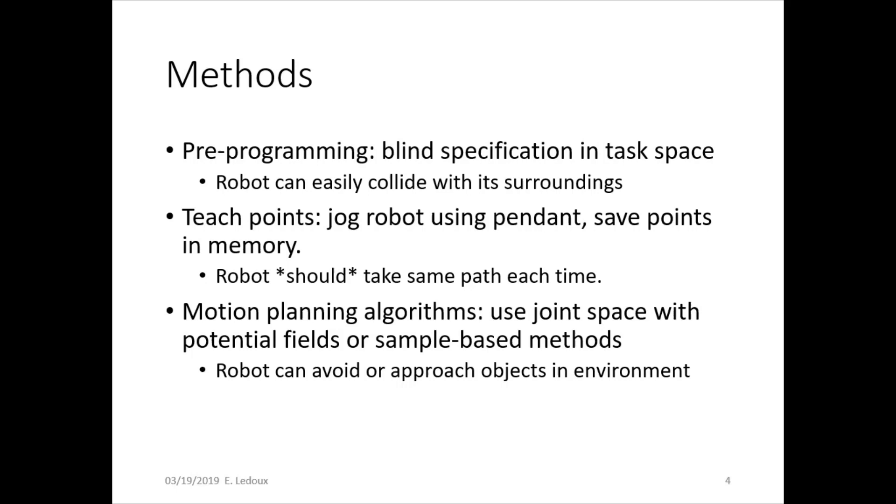Now, motion planning algorithms use joint space with potential fields or sample-based methods, and it controls the entire path the robot's going through. So not just certain points that are connected in between, but the entire motion. This helps a robot to avoid or approach objects in its environment using a potential field.